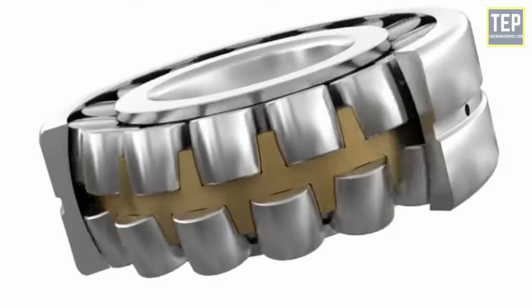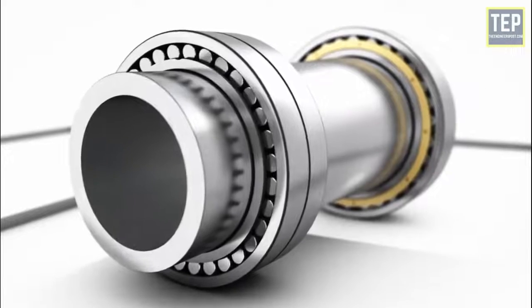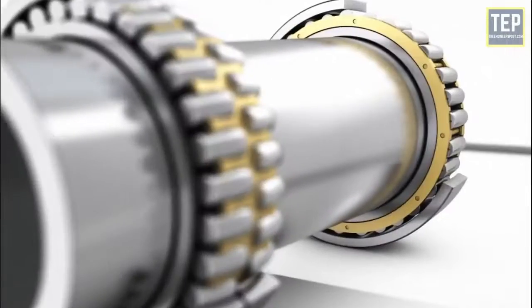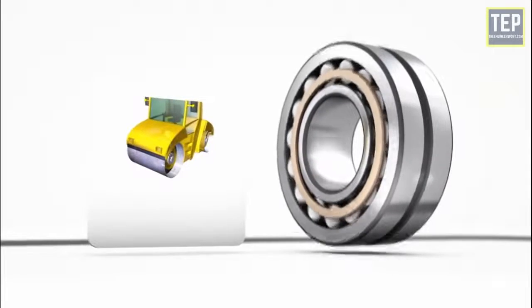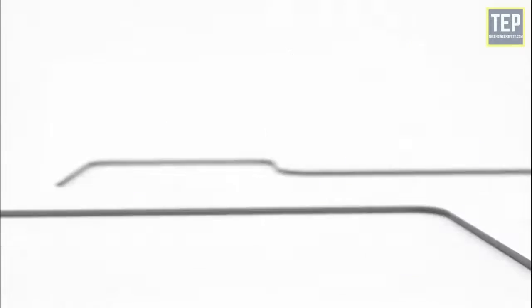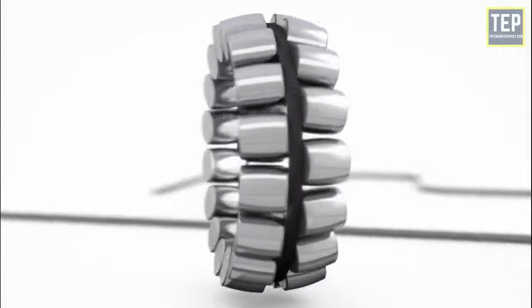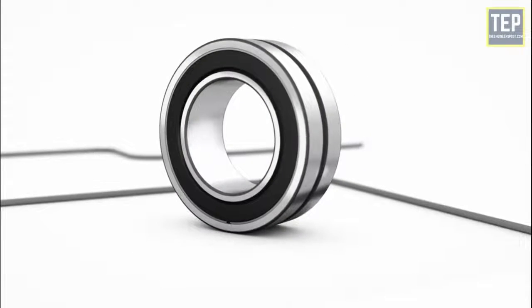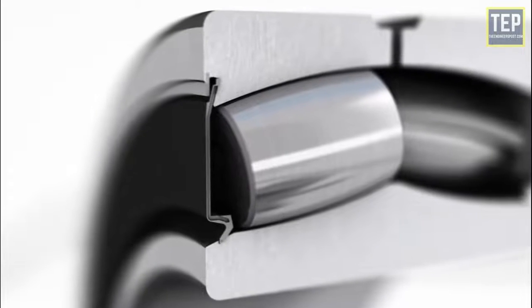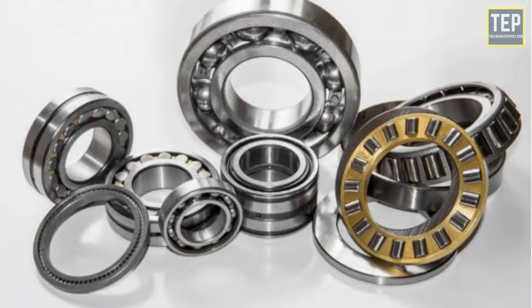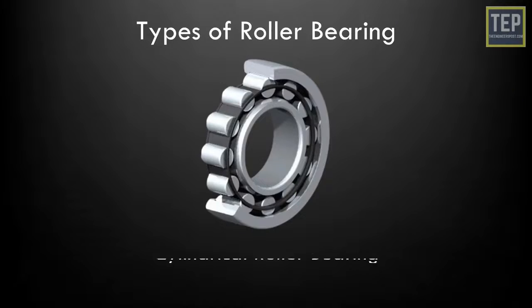Roller bearings maintain accurate alignment of every part over a long period of time and can carry heavy momentary loads. This renders them suitable for machinery which requires frequent starts and stops. Rollers make line contact with their races while balls make point contact. It has a higher load carrying capacity. Roller bearings contain cylindrical rolling elements instead of balls as load carrying elements between the races.